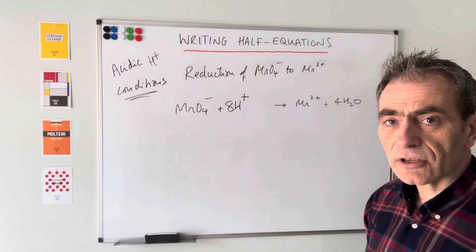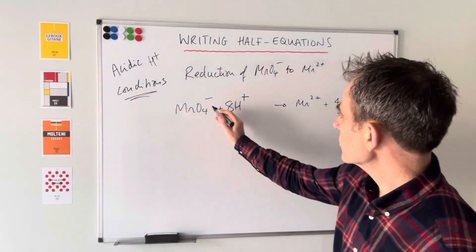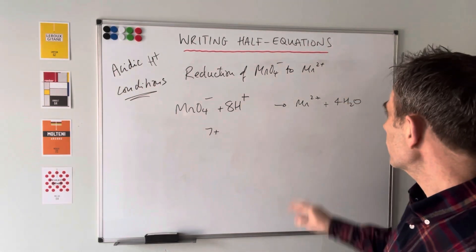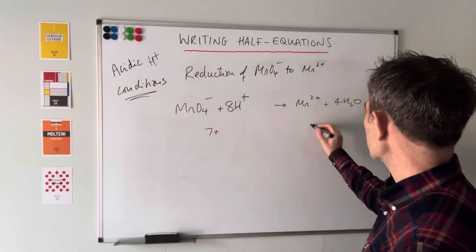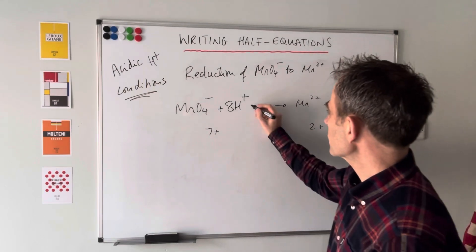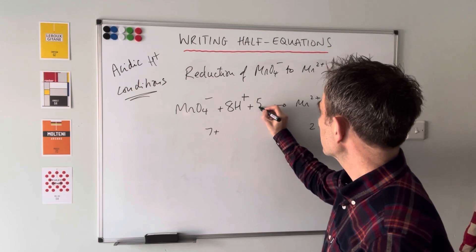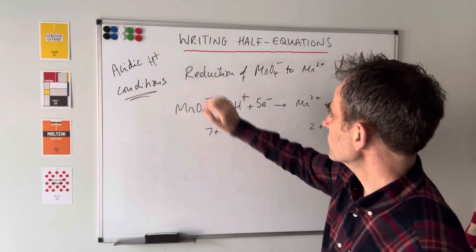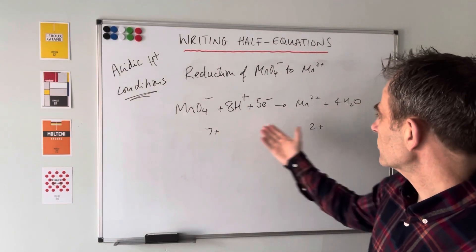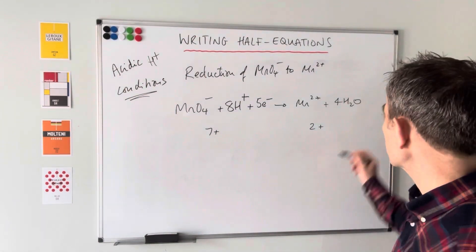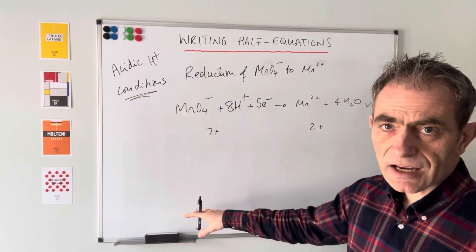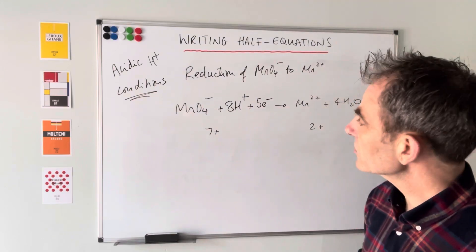The overall charge on the left is one minus plus eight plus, so seven plus. The overall charge on the right is two plus. I need to bring the left down to two plus, and I'll do that by adding five electrons. You can see it's a reduction equation - we're gaining electrons - and we need five electrons to get the charges balanced. That equation is done.